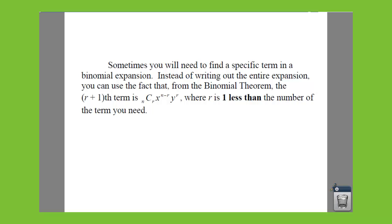Sometimes whenever you are given a binomial expansion, you need to find a specific term. In order to do that, you can use this formula that is given right here where you find your coefficient and then you multiply that by your first term to the power of n minus r times your second term to the power of r.